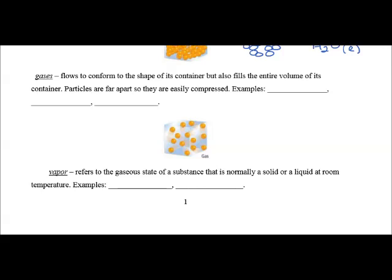Gases take the shape of the container they're found in. There is no definite shape, and they have no definite volume. Gases, because the particles are far apart from each other, can be compressed. Air is a gas. Helium is a gas. Carbon dioxide is a gas.